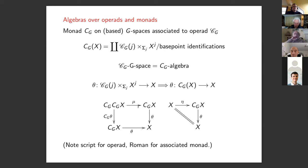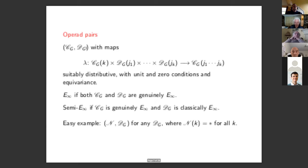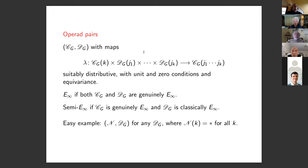For a monad you have a structure map mu, and an algebra over a monad just has two commuting diagrams — that's all it is. I always use a script letter for an operad and a roman letter for the corresponding associated monad.